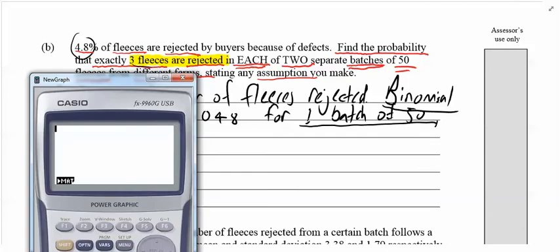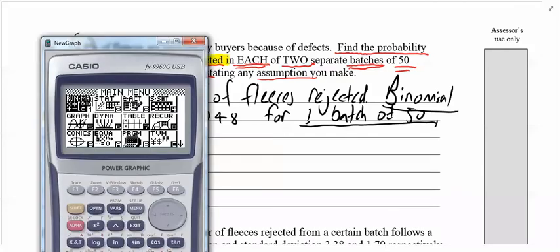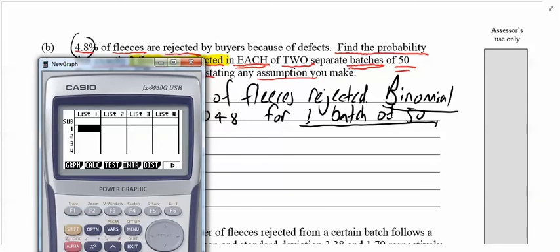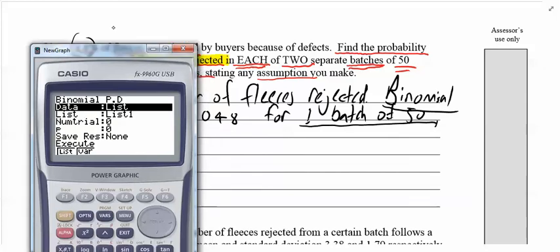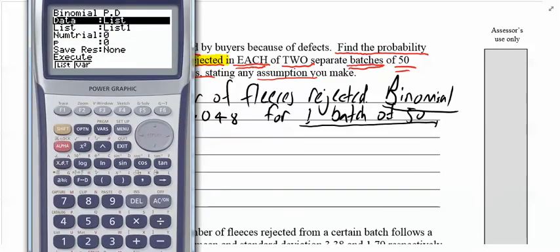And it's going to be menu, stat, distribution, binomial. And is it PD or CD, particular value or a range of values? It's a particular value because it's x equals three, so PD. I could use the formula if I want, I'm just a bit too lazy today. And so I'm going to go into it. It reverts to list, so I've got to change that to variable, F2. Remember, it will do that to you in the exam at the end of the year because they'll reset your calculator.